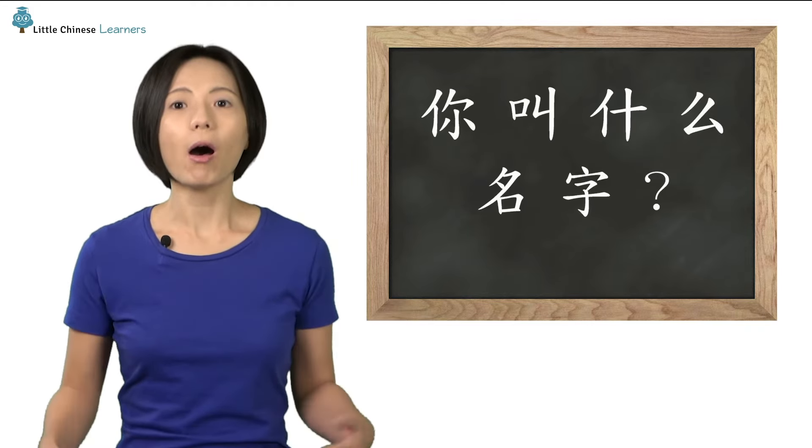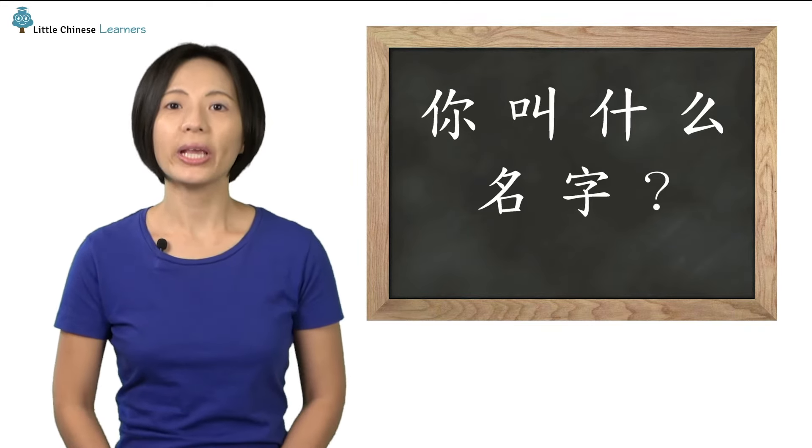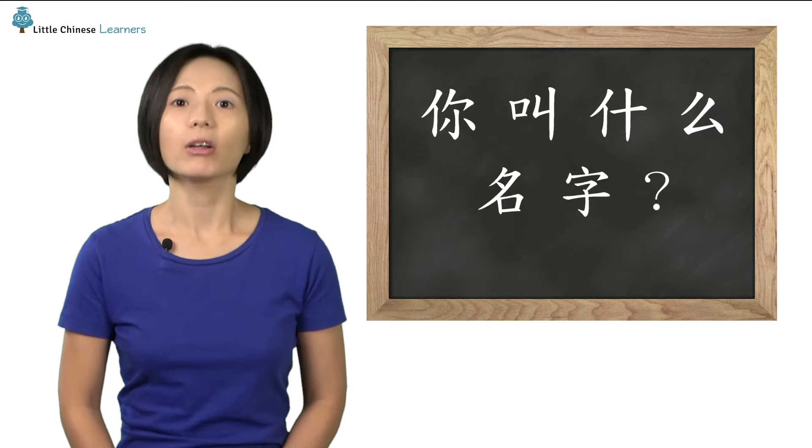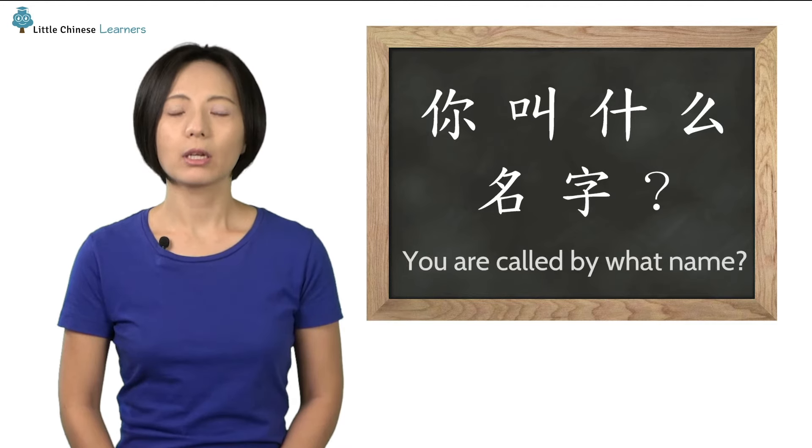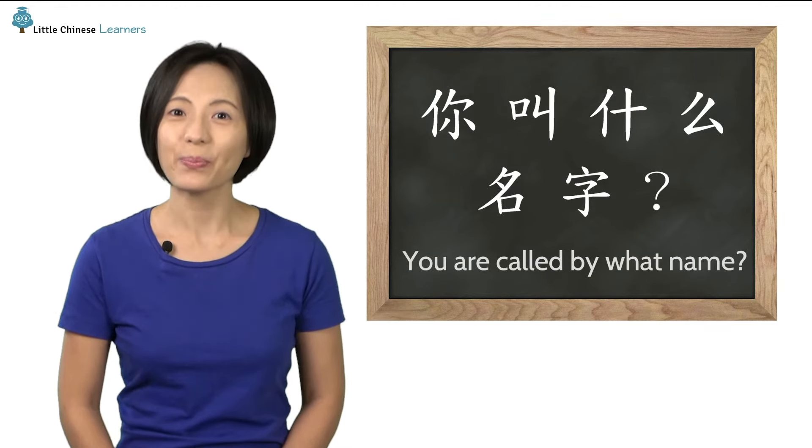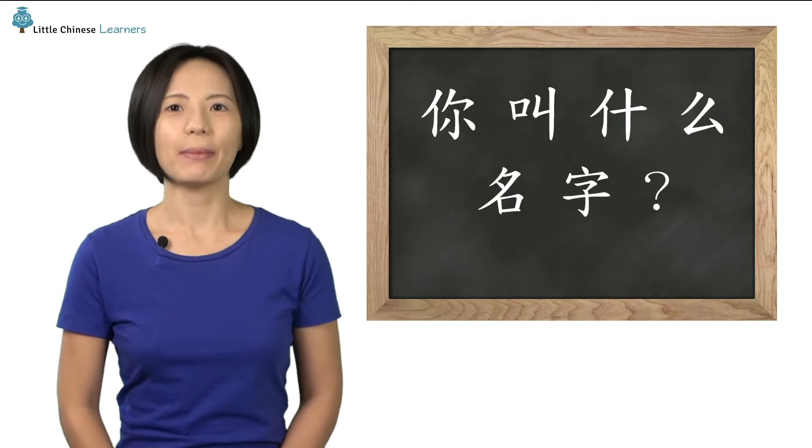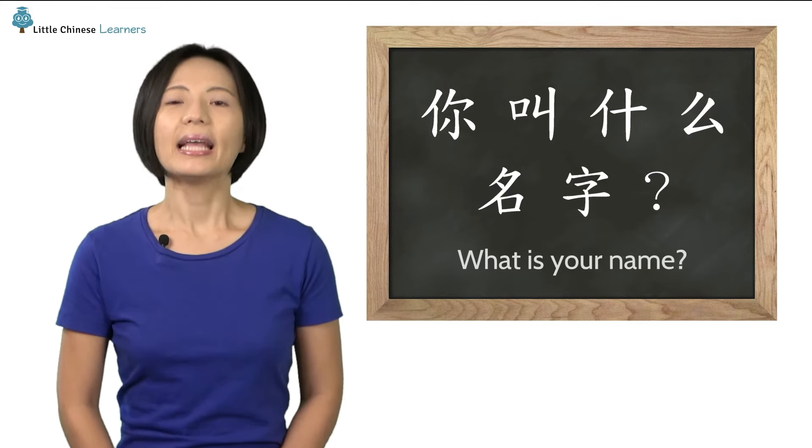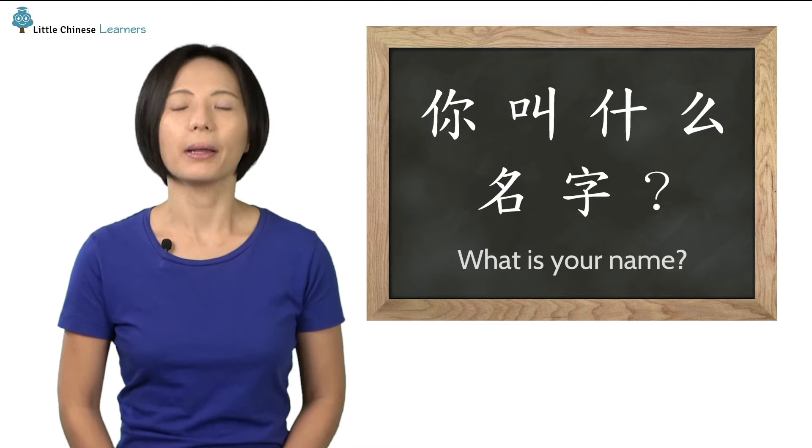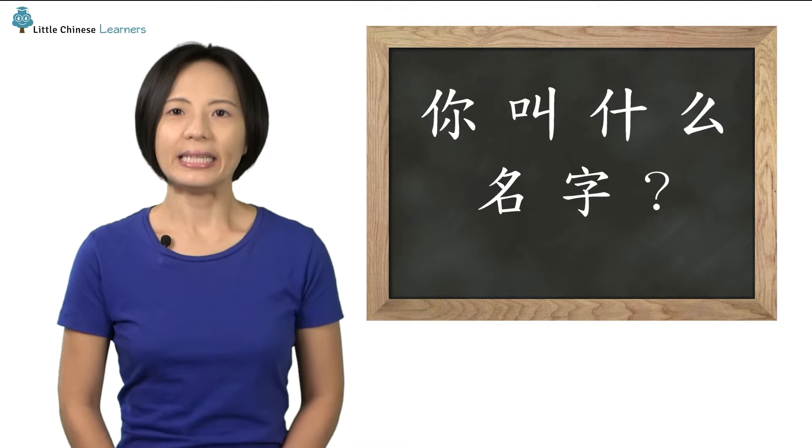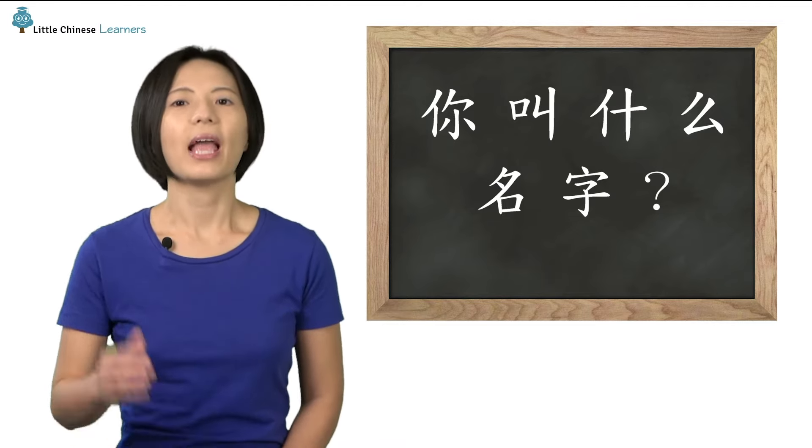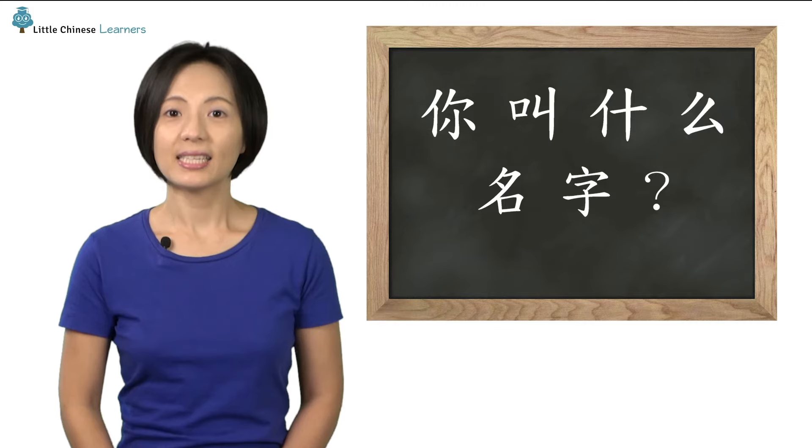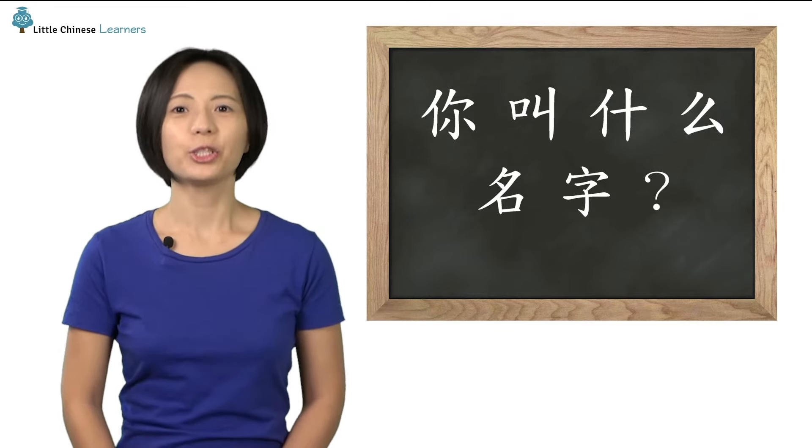When we put all the pieces together we have 你叫什么名字? Word by word, that means you're called by what name? That's how we ask for someone's name in Chinese. Now you try it. 你真棒, you're doing great.